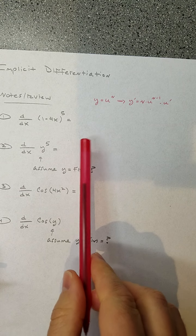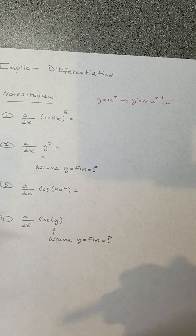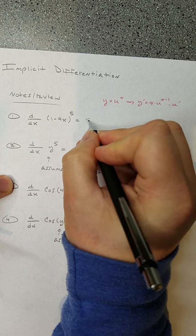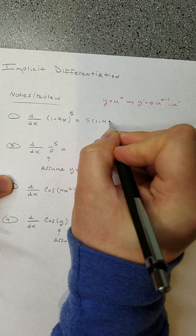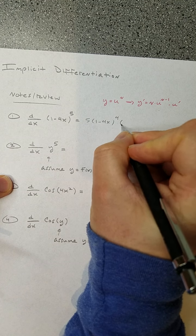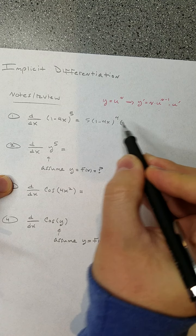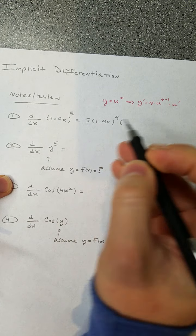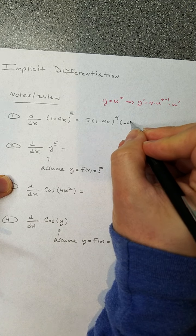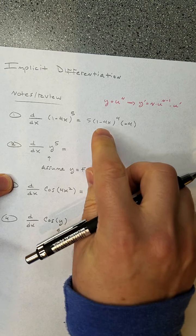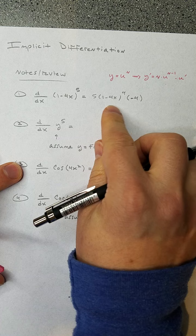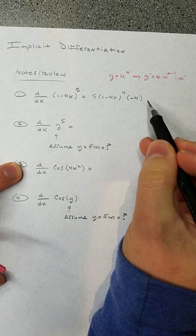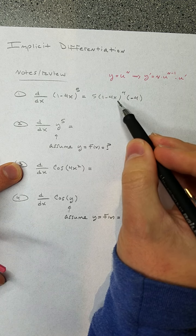So for our problem, that would be five times (1 minus 4x) to the fourth power, then multiplied by the derivative of 1 minus 4x, which is negative 4. We can simplify from there: it's negative 20 times (1 minus 4x) to the fourth power.